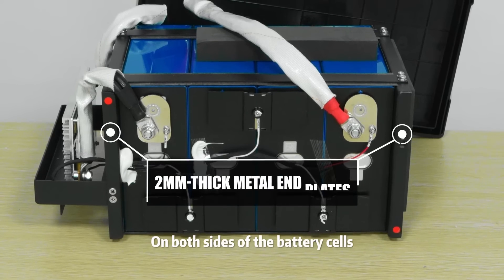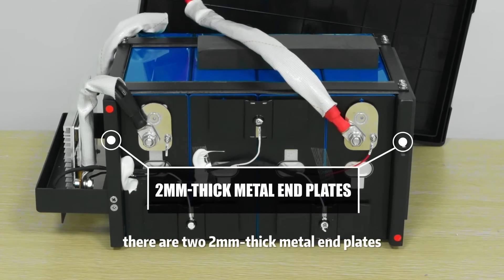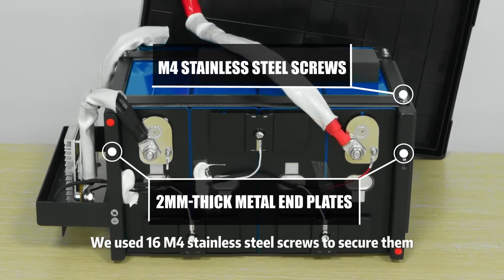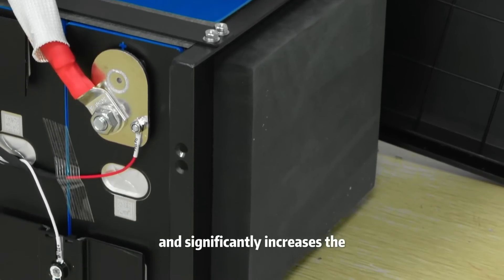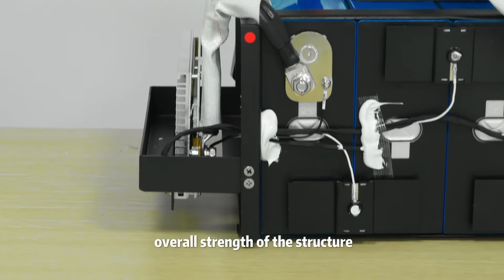On both sides of the battery cells, there are two 2-millimeter thick metal end plates. We used 16 M4 stainless steel screws to secure them, which evenly distributes pressure and significantly increases the overall strength of the structure.